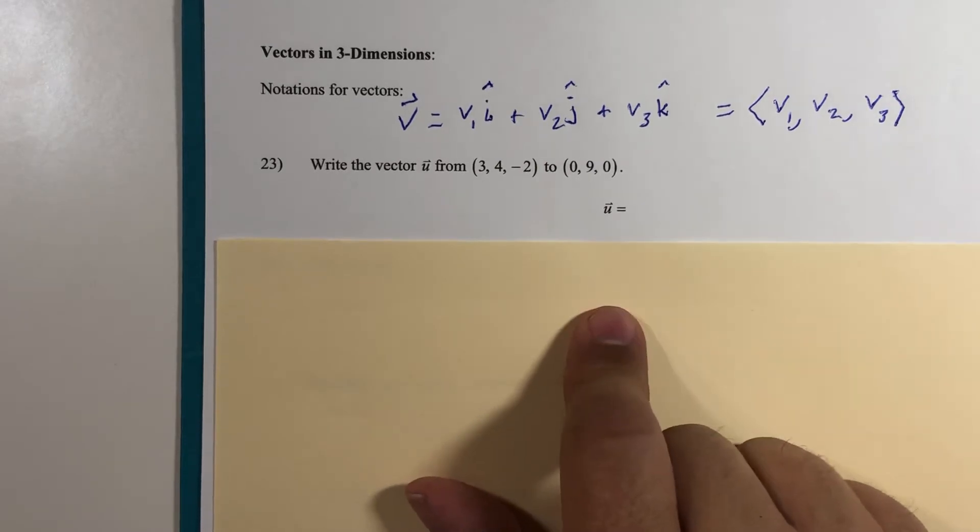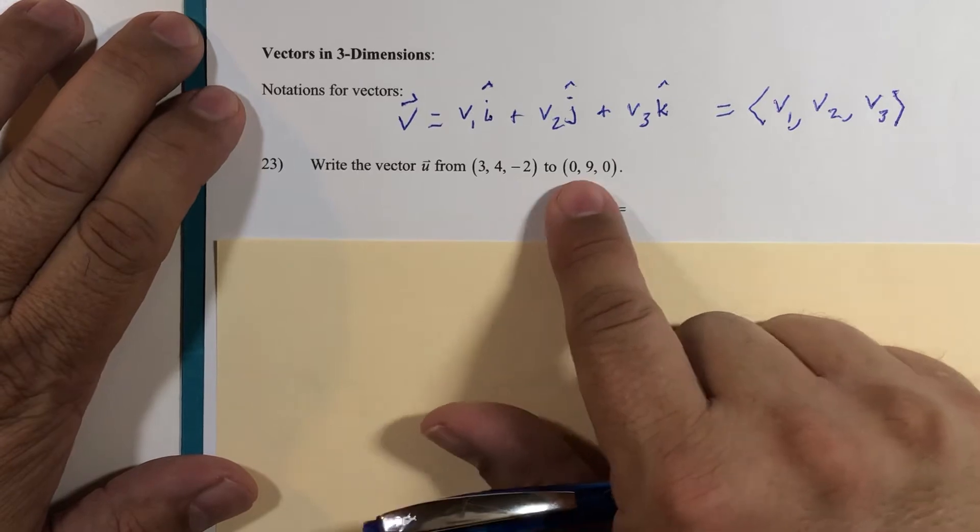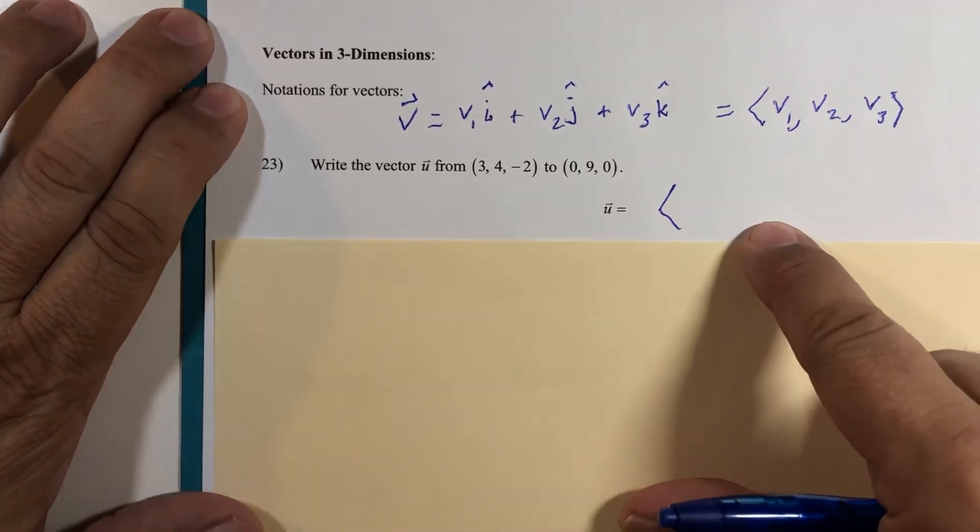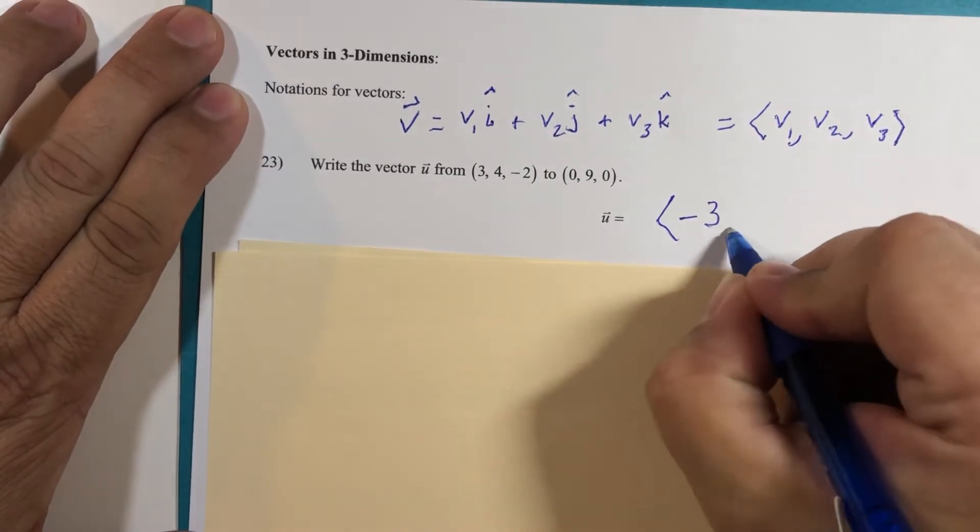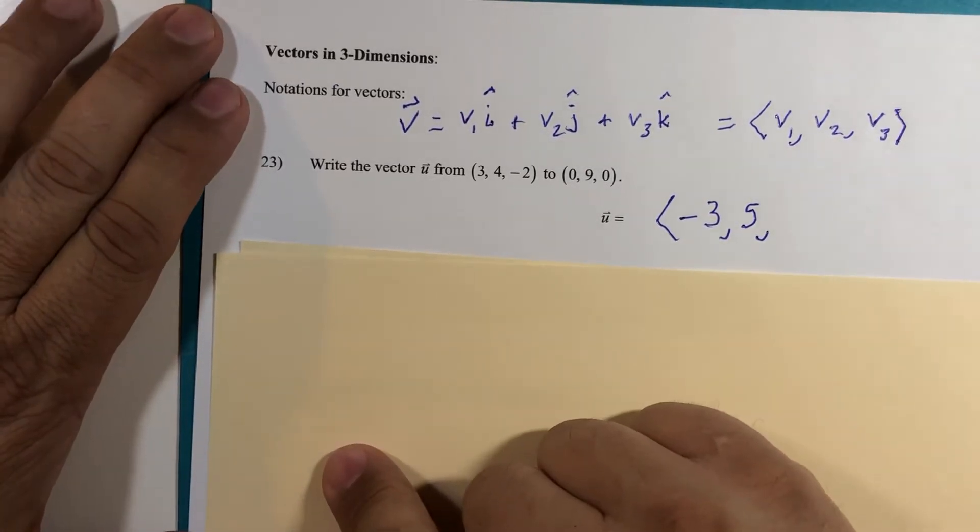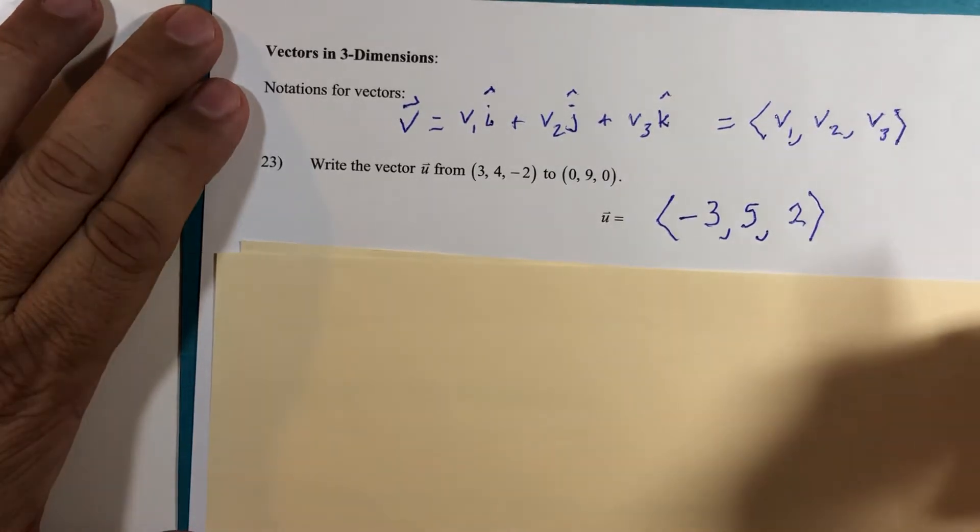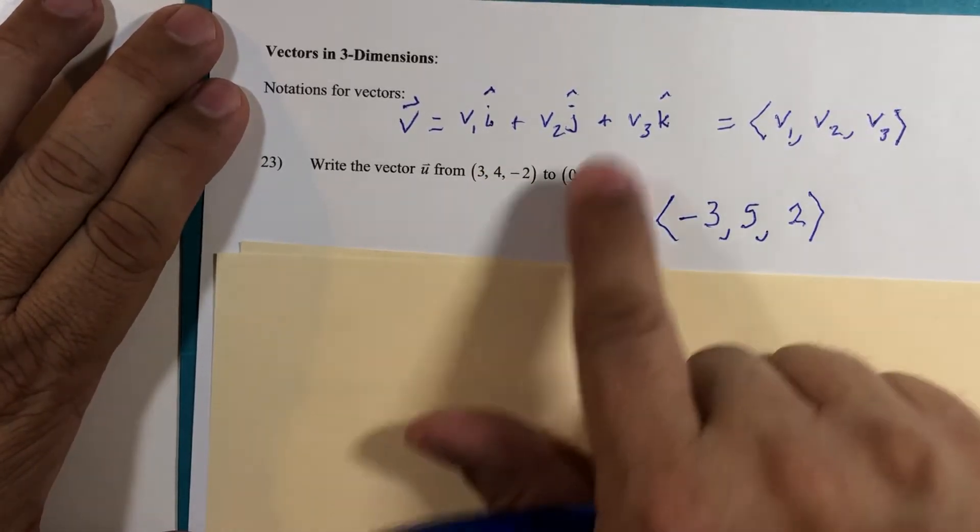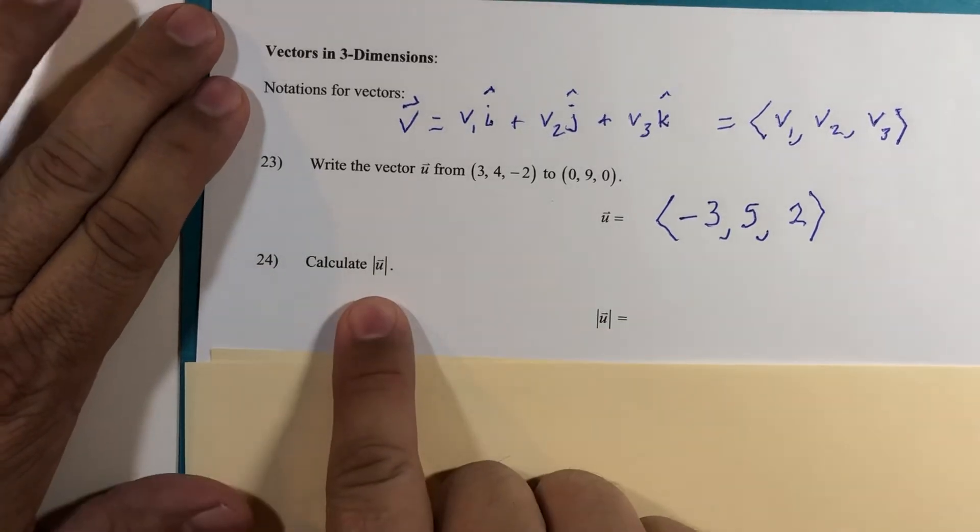So right off the bat, let's get a vector that starts at the point (3, 4, -2) in three dimensions and goes to the point (0, 9, 0). Vector u is what it's going to be called. From 3 to 0 is a loss of 3 units in the x component of this vector. From 4 to 9 is an increase of 5 units in the y direction. From -2 to 0 is an increase of 2 units in the z direction. So this vector has components <-3, 5, 2> or -3i + 5j + 2k.